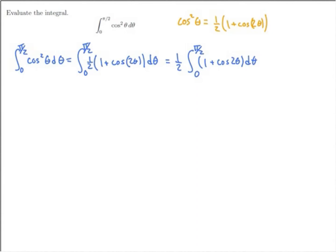So now time to think of some antiderivatives. Antiderivative of 1 with respect to theta is theta. Antiderivative of cosine of 2 theta is 1 half sine of 2 theta. And we're going to evaluate this expression at the endpoints, 0 to pi over 2.